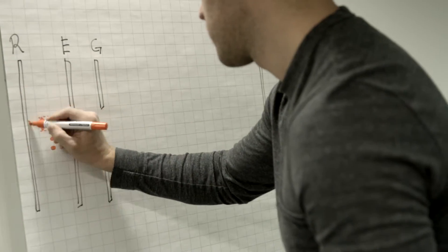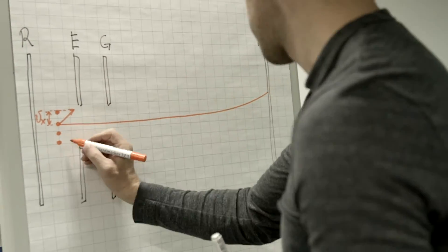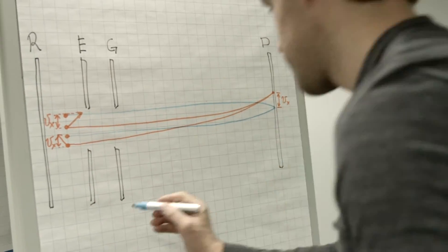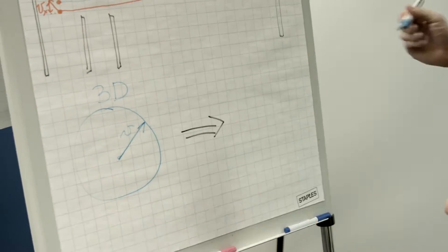Here you can see a sketch demonstrating the principle of the Velocity Map Imaging Spectrometer. This is the repeller, extractor, and ground electrode, as well as the detector.